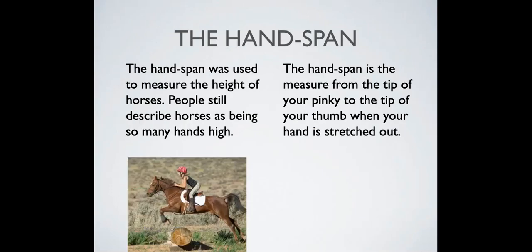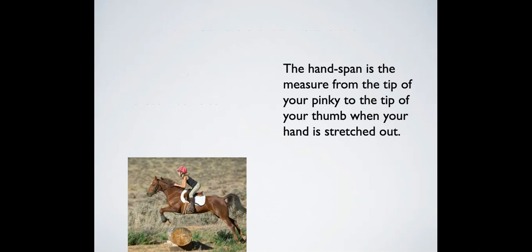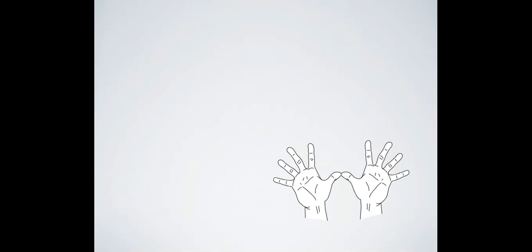The handspan was used to measure the height of horses. People still describe horses as being so many hands high. The handspan is the measure from the tip of your pinky to the tip of your thumb when your hand is stretched out. So this would be one, two, three, four handspan.